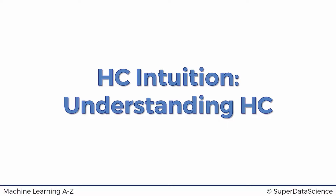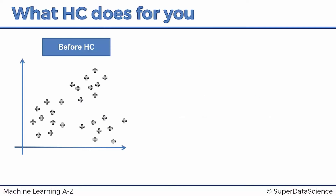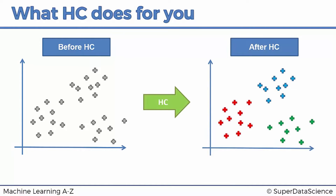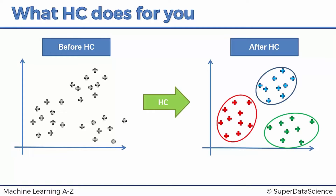So what is hierarchical clustering? If you have data points on a scatter plot in a two-dimensional space and you apply hierarchical clustering — HC for short — you will get clusters, very similar to k-means. In fact, the results can often be exactly the same as k-means clustering, but the whole process is a bit different.